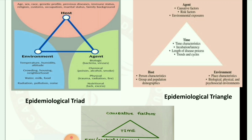Next is the epidemiological triangle. It includes time, host, environment, and agent. Agent covers causative factors, risk factors, and environmental exposures. Time characteristics include incubation, latency, length of disease process, trends and cycles. Host covers person's characteristics, group and population demographics. Environment includes place characteristics, biological, physical, and psychosocial environments.